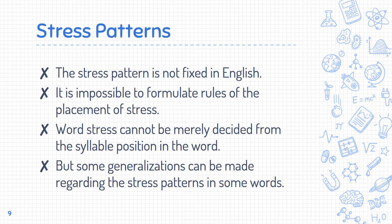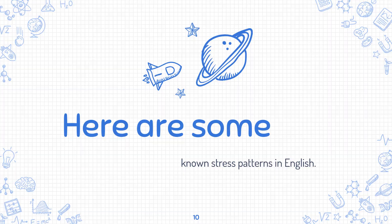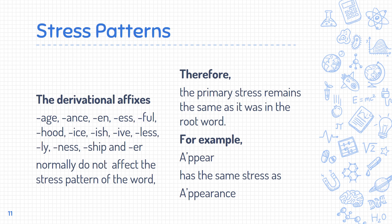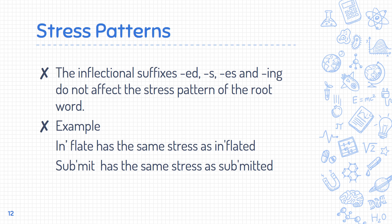The stress pattern is not fixed in English and it is impossible to formulate strict rules for stress placement. Word stress cannot be merely decided from the syllable position in the word, but some generalizations can be made. For example, derivational affixes such as -ness, -hood, -ish, -ive, -less, -ly, -ship, and -er normally do not affect the stress pattern of the word — 'appear' has the same stress as 'appearance.' The inflectional suffixes -s, -es, and -ing do not affect the stress of the root word — 'inflate' has the same stress as 'inflated.'